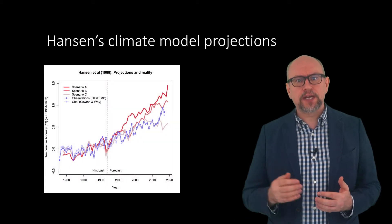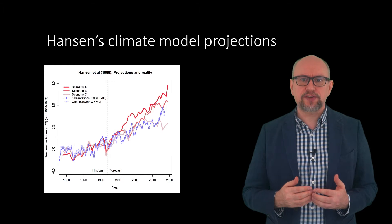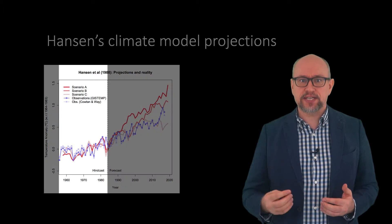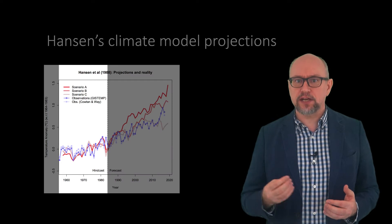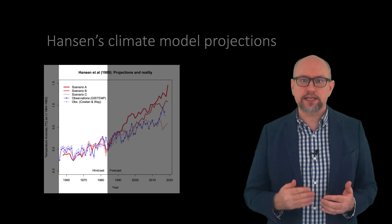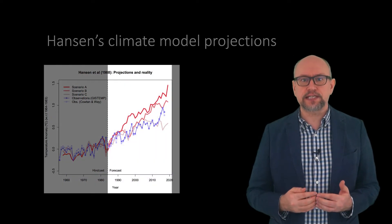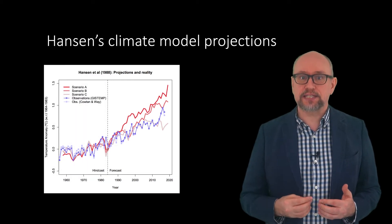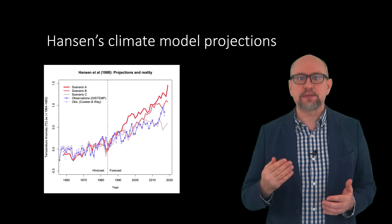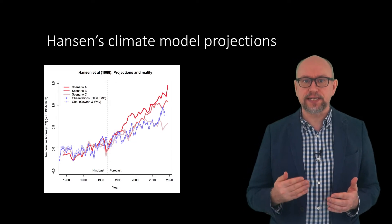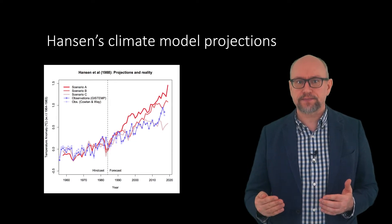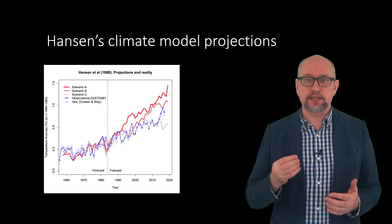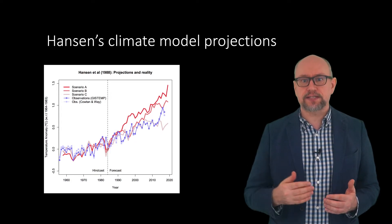This figure shows the projections for these three scenarios together with the observed temperature change. The data from 1958 to 1984 represent a hindcast, and that after 1984 represent a forecast. Given that the actual greenhouse gas emissions have been closest to Scenario B, let's compare against Scenario B.